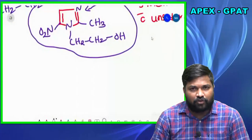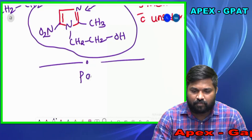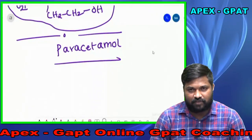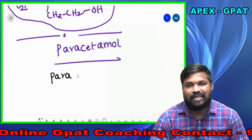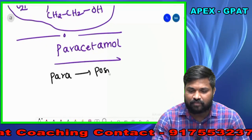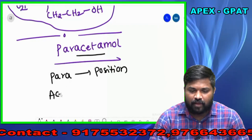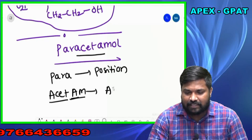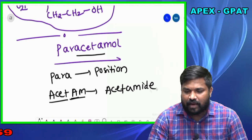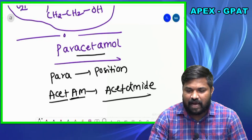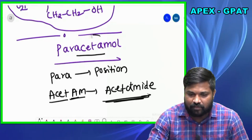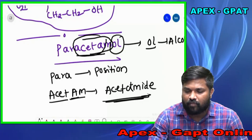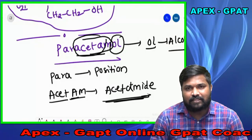The next structure is Paracetamol. How to remember the paracetamol structure? Para indicates the position on benzene. Aceta plus M — that indicates acetamide: aceta plus amide equals acetamide. And O indicates alcohol. So paracetamol is Para-Acetamide-Alcohol.